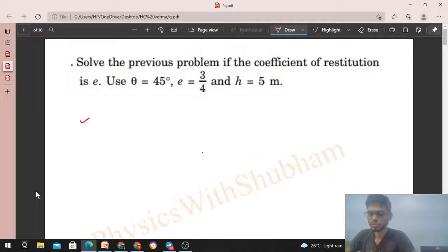Okay, hi everyone. So let's discuss this problem. It says solve the previous problem if the coefficient of restitution is e. Use θ = 45°, e = 3/4, and h = 5m.